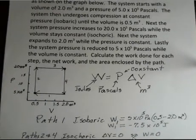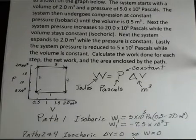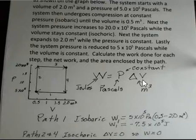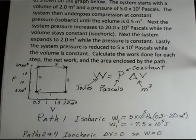On paths 2 and 4, I'm going to discuss these together. The volume is constant. If delta V is 0, what's the value of the work? It will be 0. So those two paths are done.